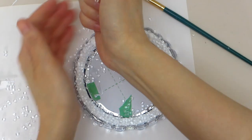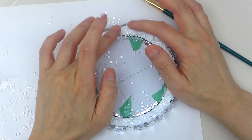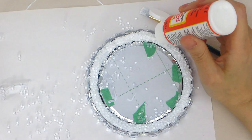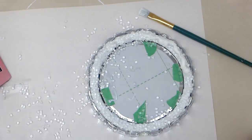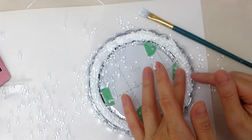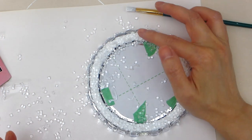Once the first layer of vase filler is applied and dried, apply a second layer of Mod Podge and sprinkle more vase filler if you would like. Make sure after the final layer of vase filler you apply a final coat of Mod Podge to seal everything into place.